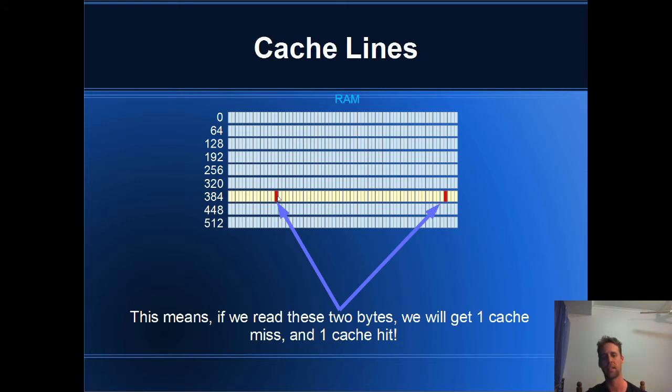All right, the cool thing about cache lines is that if you read two bytes in the same cache line, you'll get one cache miss for reading the first byte. But then you'll probably get a cache hit since the whole line is brought into cache. It doesn't matter if you're operating forwards or backwards, cache lines are still going to give you the benefit. So if you've read this entire cache line into cache, it doesn't matter if you're iterating through an array forwards or if you're going backwards, you're still going to get cache hits.